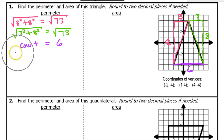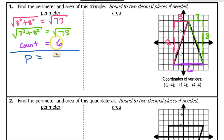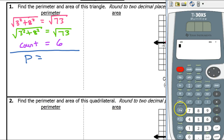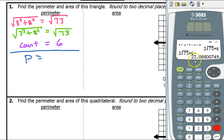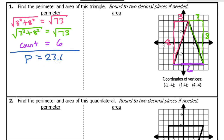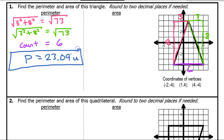Now we can find the perimeter by adding all of these up. So the perimeter is going to equal the sum of all of these. In my calculator, I can just do radical 73 plus radical 73 plus 6. I get the expression, and turning it into a decimal to two decimal places: 23.09. So the perimeter is 23.09 units.